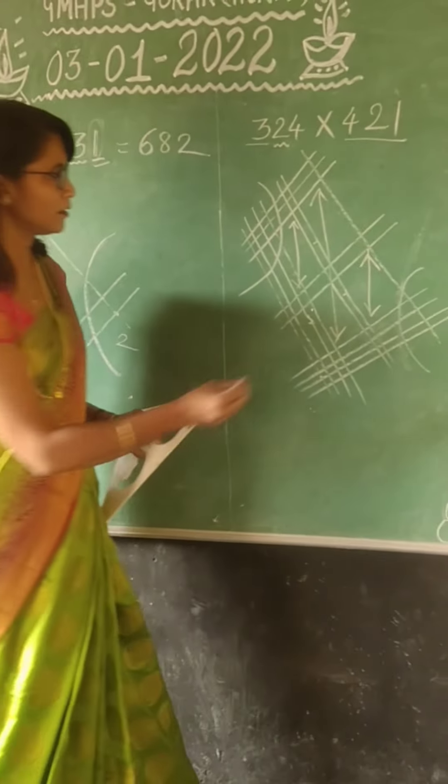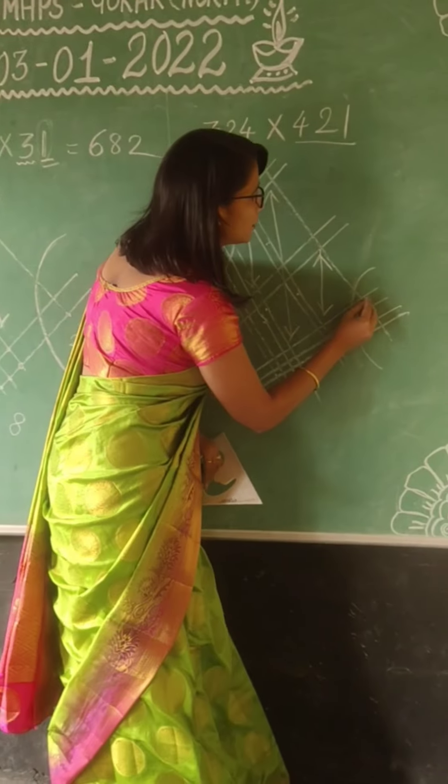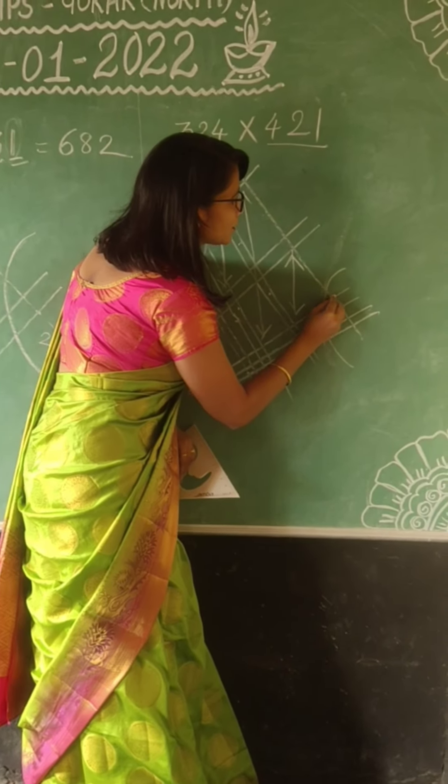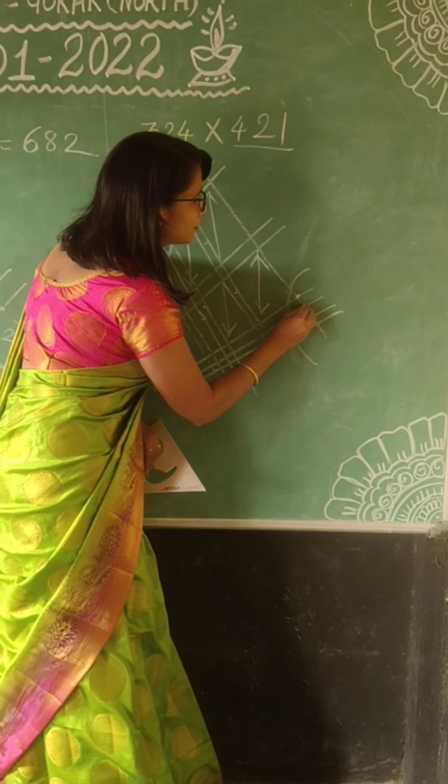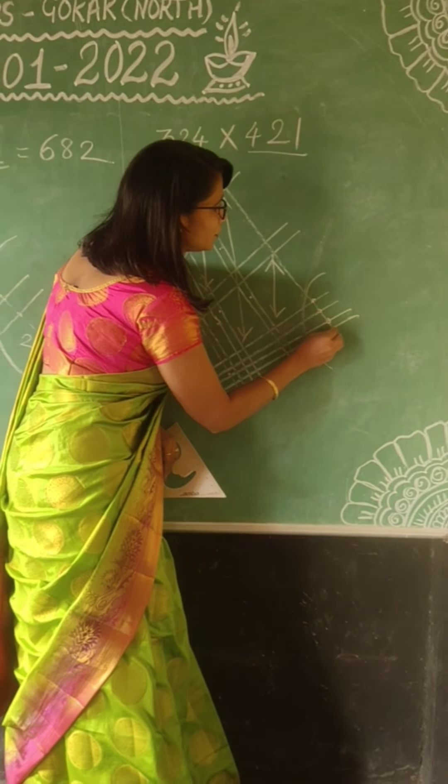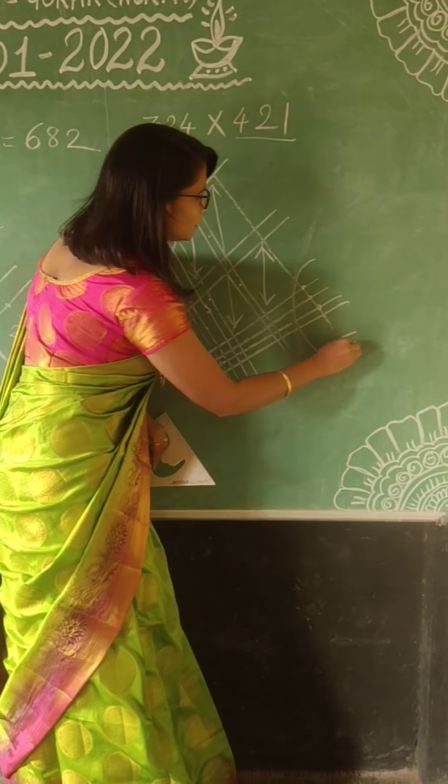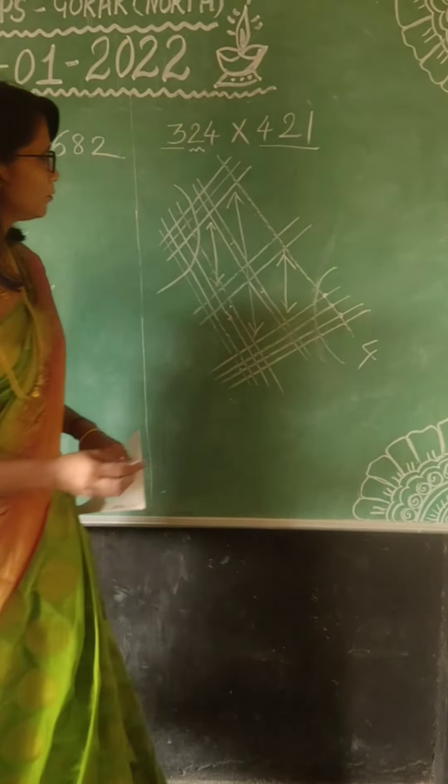Okay, now count the intersection points: 1, 2, 3, 4. Here the count will be 4.